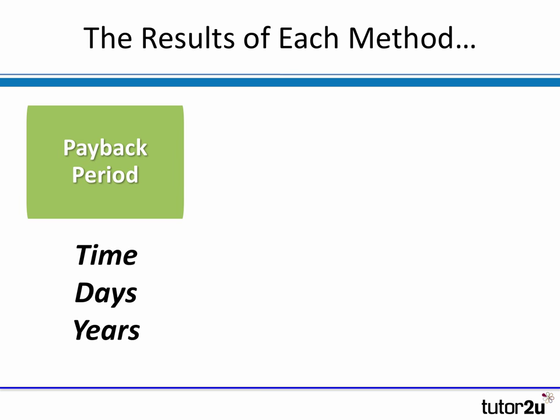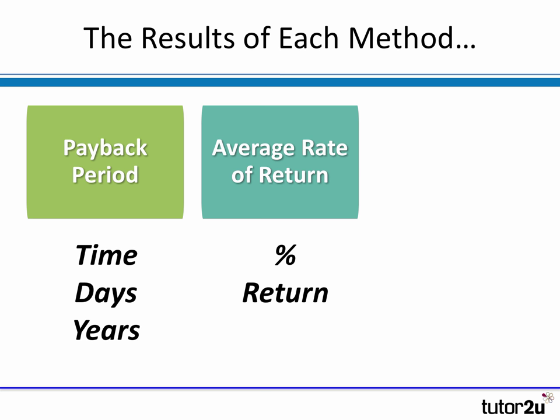It's important to remember that the payback period generates a result that is slightly different from the other two main methods of investment appraisal. The payback period is expressed in terms of time — for example, years or days — how long does it take for the initial investment to be repaid? Whereas the average rate of return gives you a percentage return rather than a measure recorded in time.